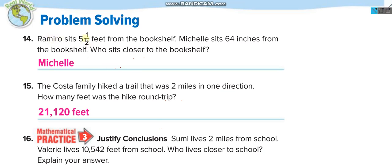Word problem: Ramiro sits 5 and a half feet from the bookshelf; Michelle sits 64 inches away. Convert Ramiro's distance: 5 times 12 equals 60 inches, plus half a foot (6 inches) equals 66 inches. Ramiro is 66 inches away and Michelle is 64 inches away, so Michelle sits closer.